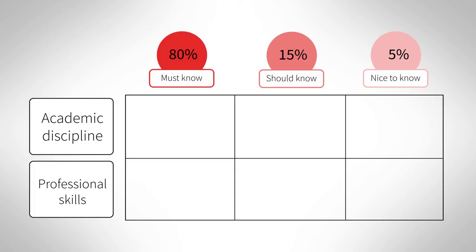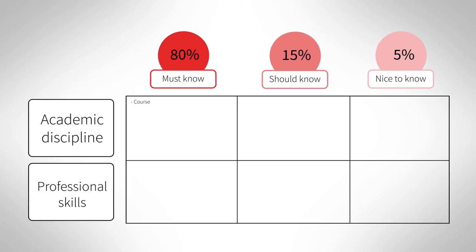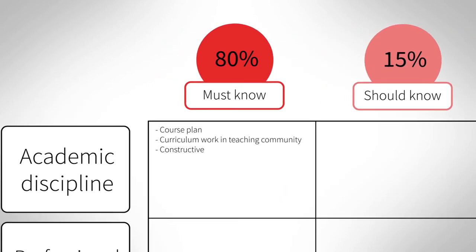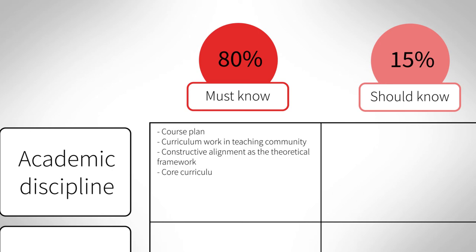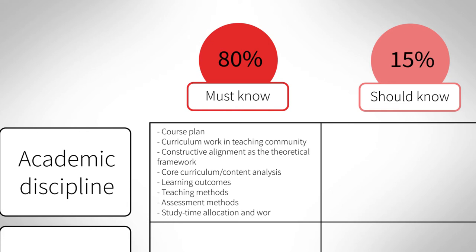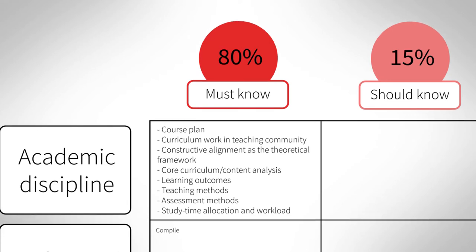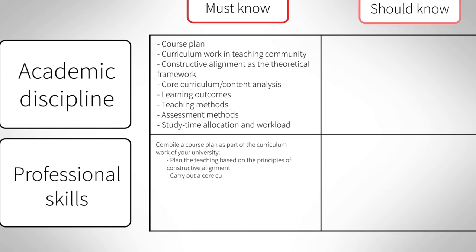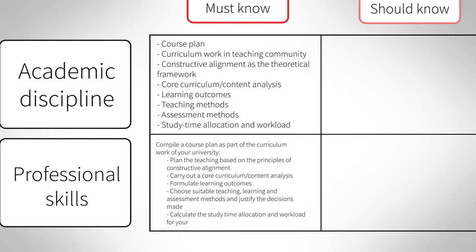In our example, approximately 80% of the content themes, such as learning outcomes and teaching and assessment methods, fall into the must-know category — that is, knowledge about these contents. Corresponding skills, that is, what the student will be able to do, includes the ability to formulate learning outcomes, choosing suitable teaching and assessment methods, and justifying the teaching decisions made.